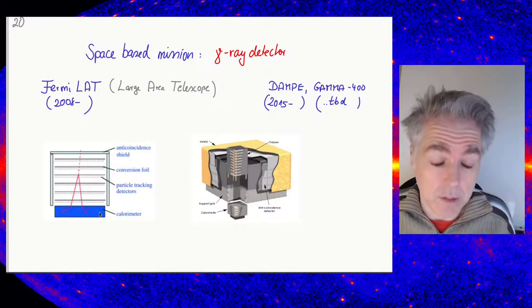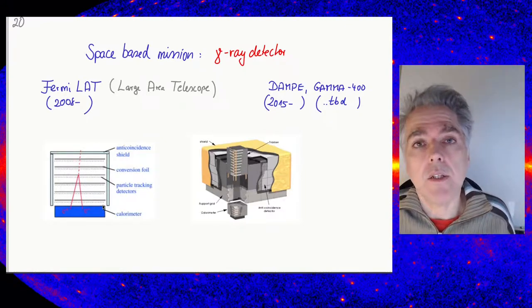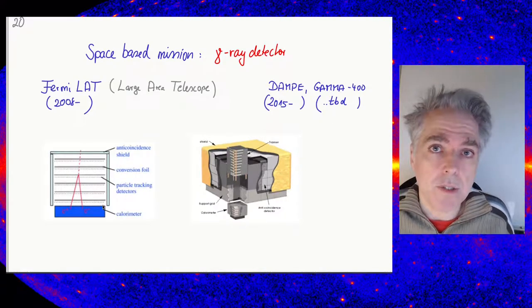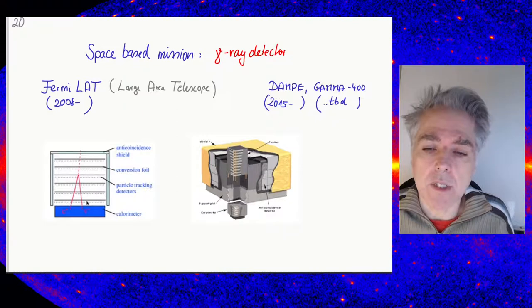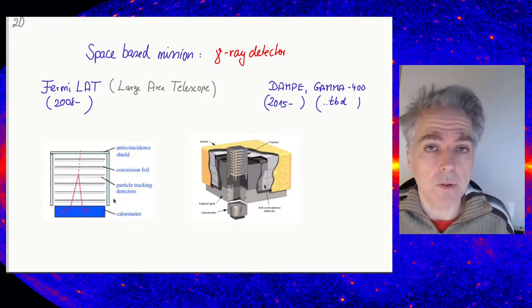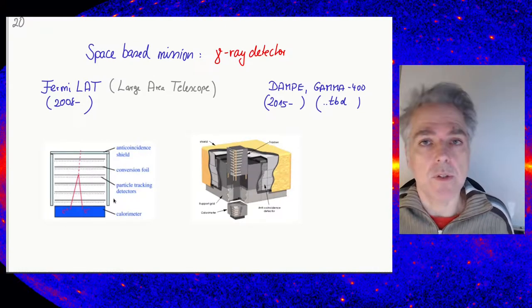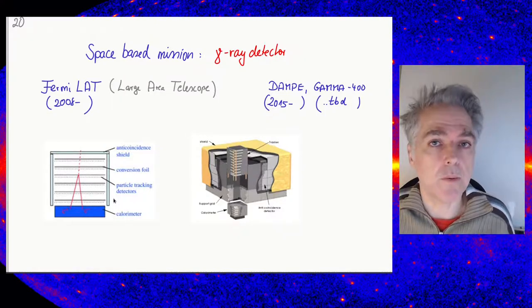Since we're talking about photon detectors, not charged, we need essentially just a tracker which tracks the electron and positron, and a calorimeter. That's how this device looks. A very important component is to have an anti-coincidence shield. The whole detector is covered by a scintillator detector that produces a strong signal when an electron or proton passes through, because we're not interested in those. This acts as a veto.